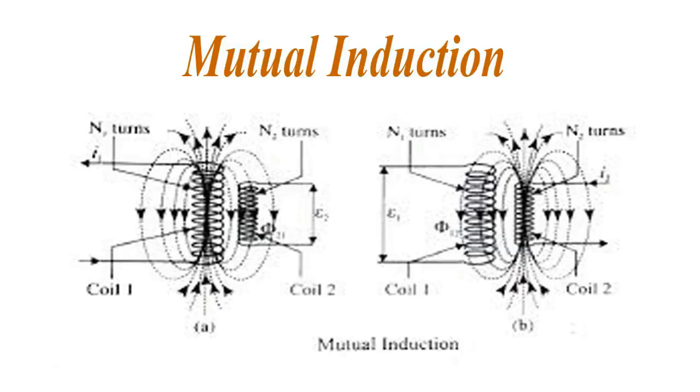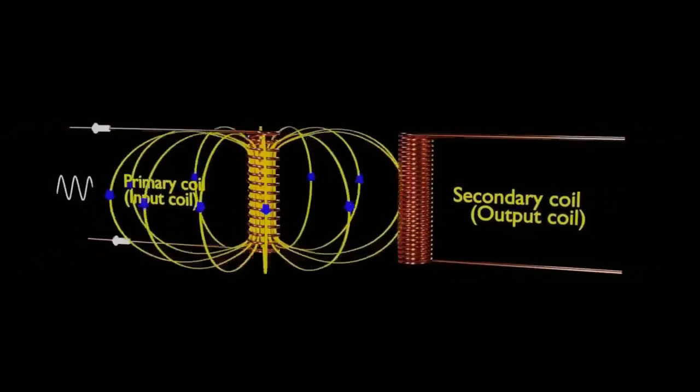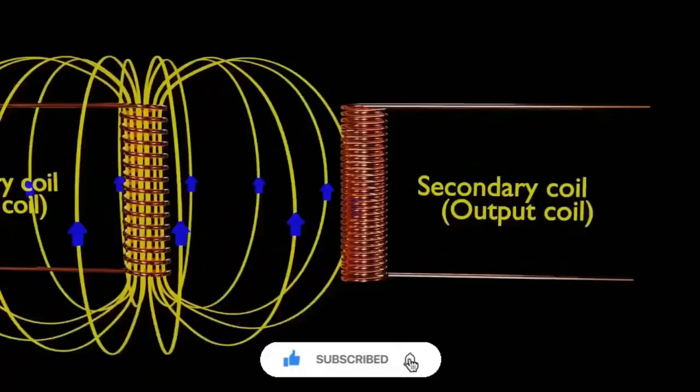Transformers step up voltage for long-distance transmission and then step down for safe use in homes and electronics. A transformer operates on the principle of electromagnetic induction, specifically mutual induction. A changing current in the first coil or primary creates a changing magnetic field, which in turn induces a voltage in the secondary coil.